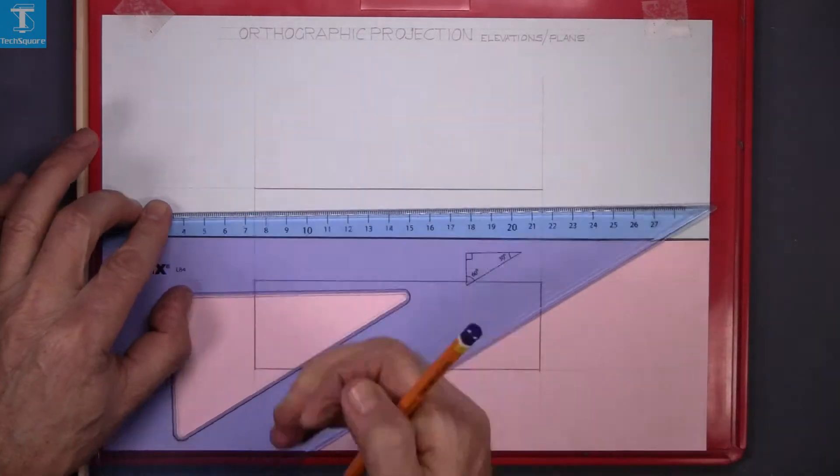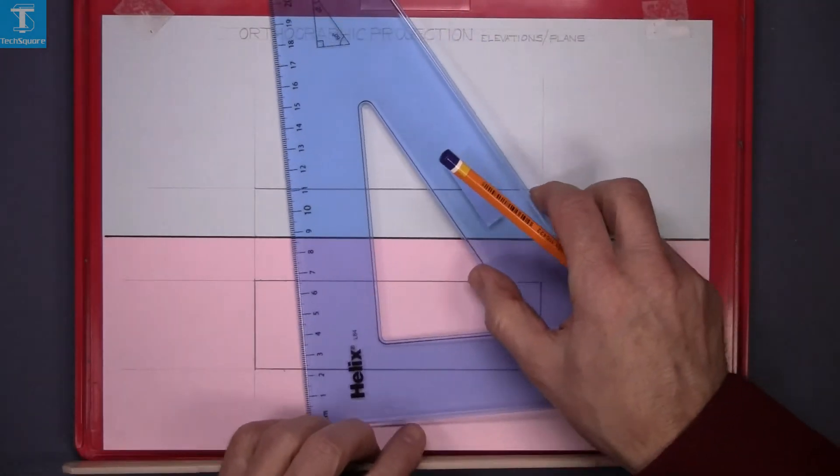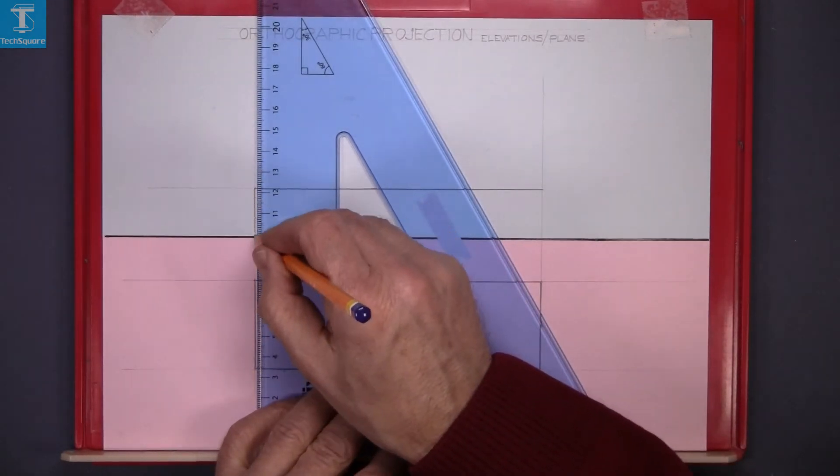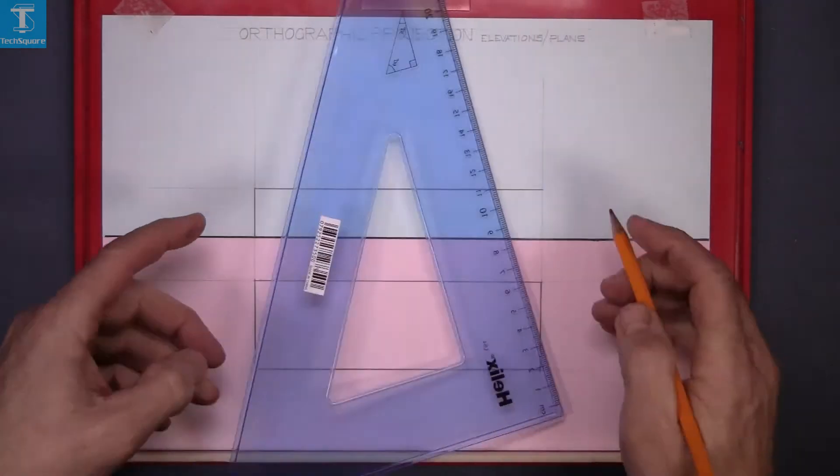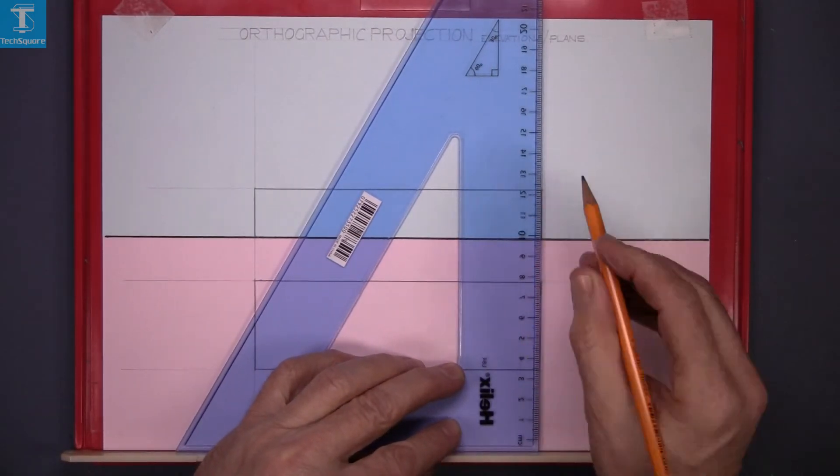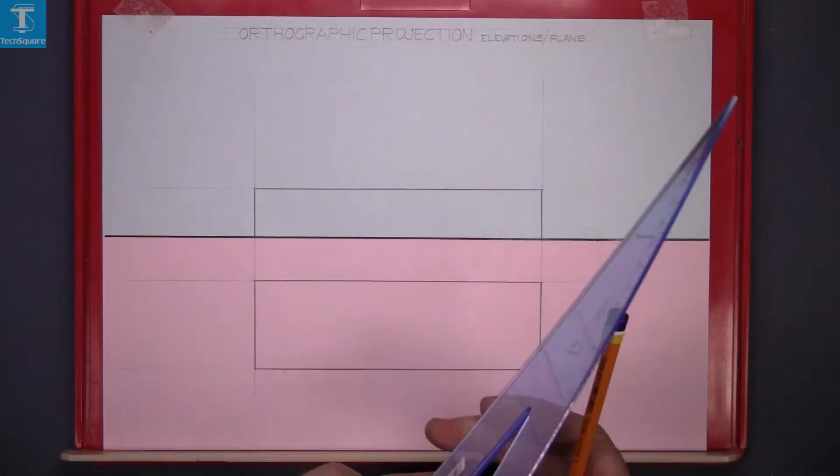Line it in now. Line in the vertical line on this end here, and on this end here. That's your drawing complete.